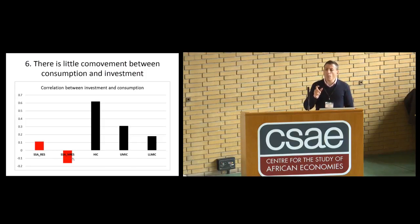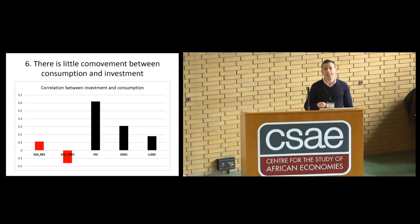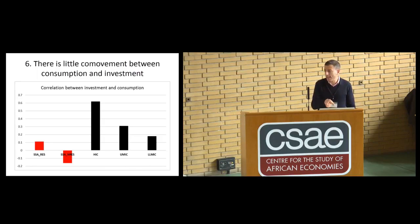The co-movement between investment and consumption is one of the defining features of real business cycle theory — the outcome of a common factor driving main macroeconomic variables. The absence of this co-movement is an indication that a standard real business cycle may be missing in this region. Instead, sector-specific shocks affect households or firms without being dissipated through other sectors of the economy, remaining confined to where they arise.